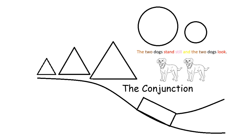You can see here in the sentence, the two dogs stand still and the two dogs look, that I have used the word and as a conjunction to join two complete ideas. I've colored it yellow for the conjunction.